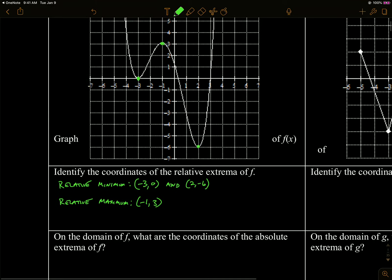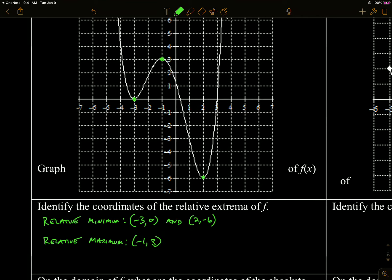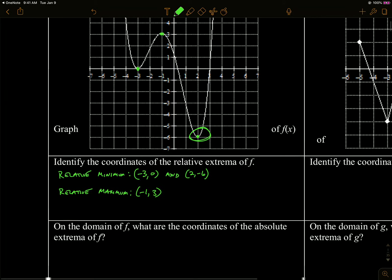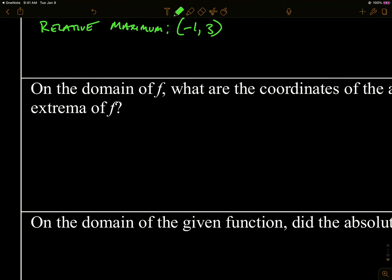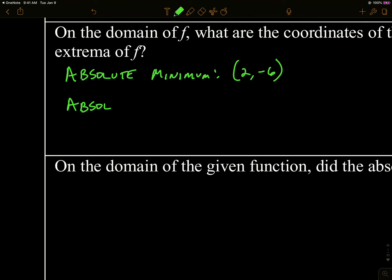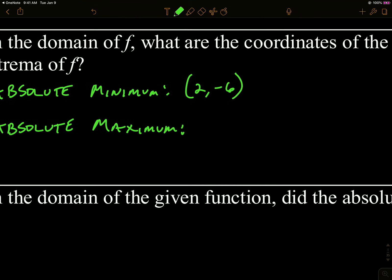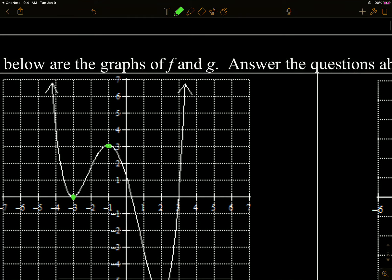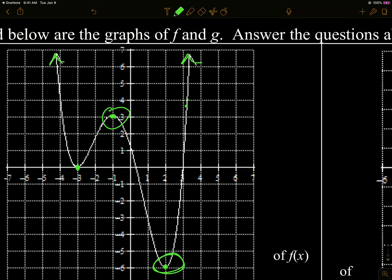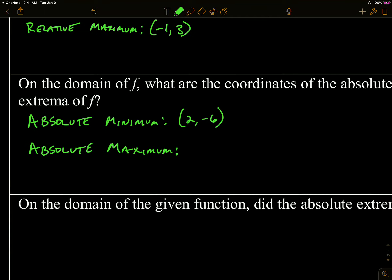Let's look at any absolute extrema. So for the absolute minimum, this is the lowest point on the graph — that is the absolute minimum. And then the absolute maximum — we have none on this graph. Because of these arrows, even though this is a relative maximum, it's not the highest point on the graph, because all these infinite points up here are bigger. Since the arrow keeps going, there is no absolute maximum.